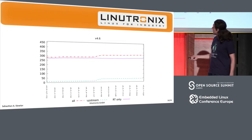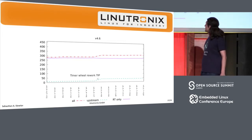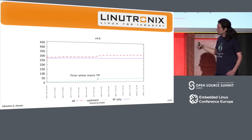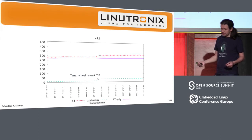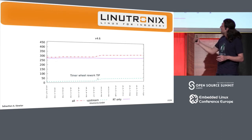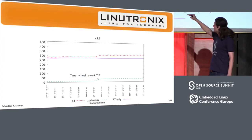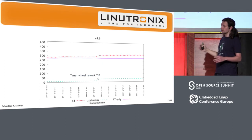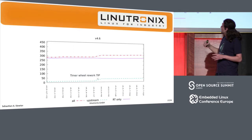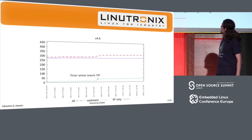Then we went to 4.6, and the spike there ended up being the timer clockevent rework. At that time the clockevent rework was done in the tip tree, was more or less tested, and I pulled them back into RT and built on top of it. If you look at the blue line — the patches targeted for upstream — it slightly goes down, mostly because the timer rework allowed us to remove some patches that were RT-specific.